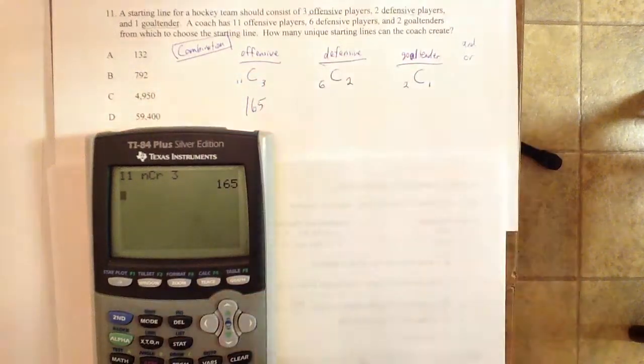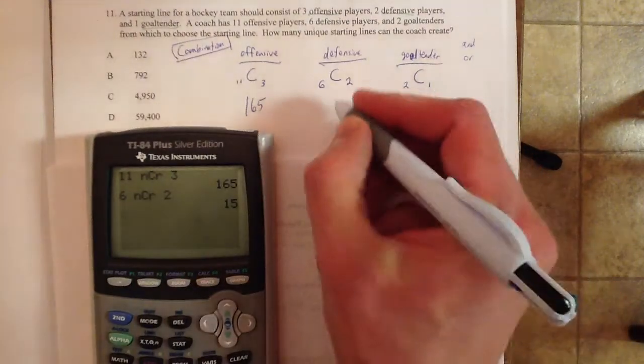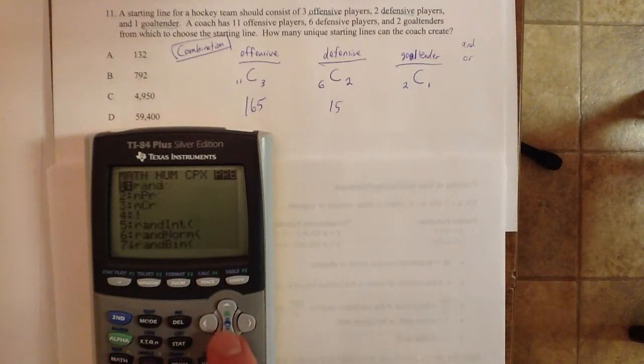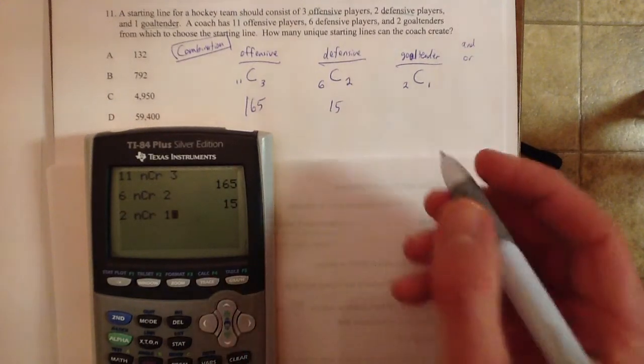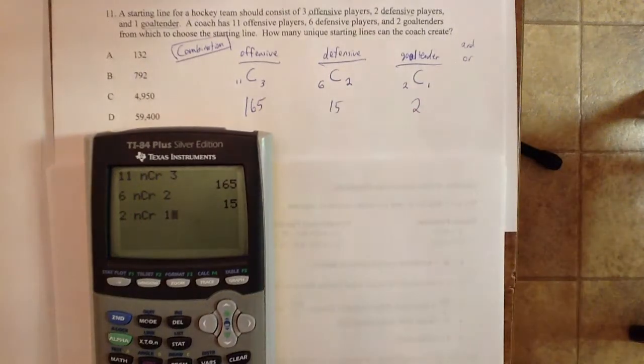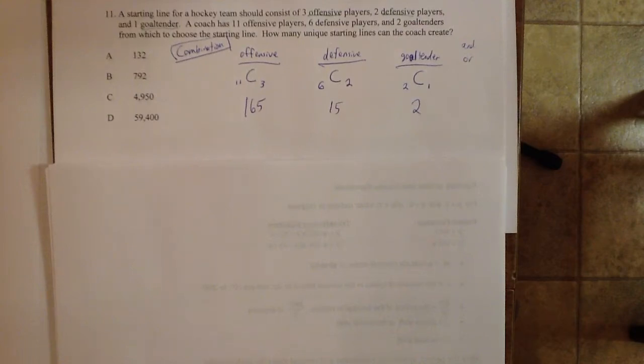There's 165 of those. 15 of those. Now I would like to think you could do this one in your head. How many groups of one can I have from two people? That would be two groups.